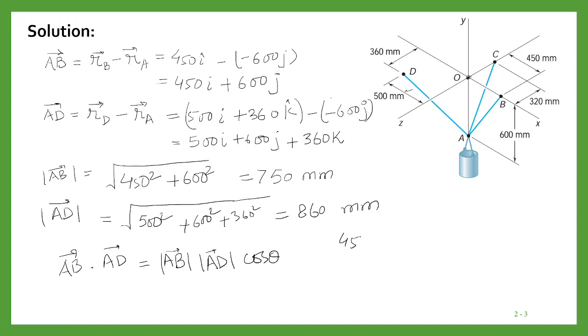So AB is 450i plus 600j dotted with 500i plus 600j plus 360k. As we know, the dot product of vectors means i dot i will be equal to 1 and i dot j will be equal to 0. This we know.